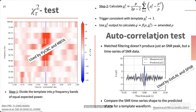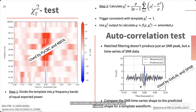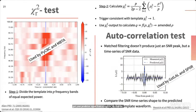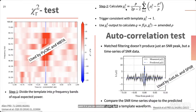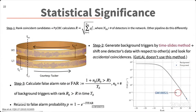We also perform an autocorrelation test, which uses the predicted SNR time series obtained by cross-correlating the template with itself, and compares it with the measured SNR time series. By comparing these two quantities you can construct a statistic similar to the reduced chi-squared test and use it to further re-weight the SNR.